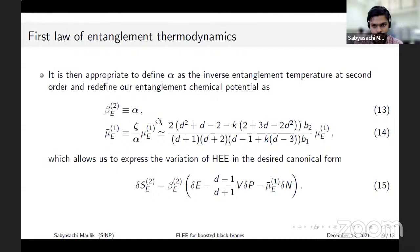In doing so we find that the variation of entanglement entropy can actually be expressed in the canonical first law form with the redefined entanglement temperature and chemical potential.